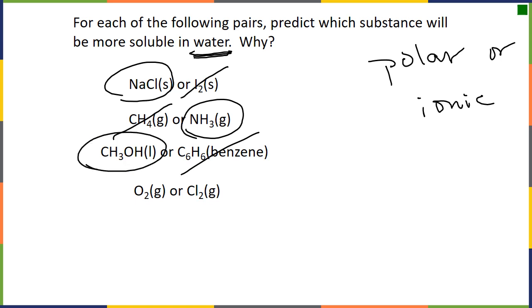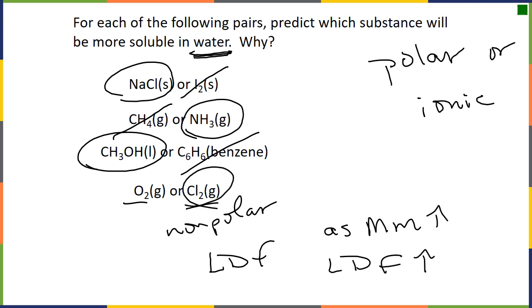In this case, it's going to be methanol, because it has hydrogen bonding. And in this case, which is interesting, both of these are nonpolar, which means all they have are London dispersion forces. But we know that as the molar mass goes up, the London dispersion forces go up. Therefore, chlorine will be more soluble in water because it has larger intermolecular forces.